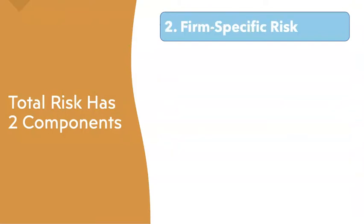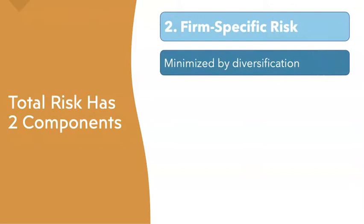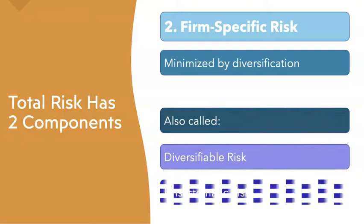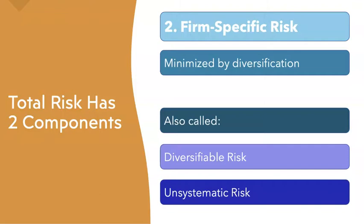On the other hand, firm-specific risk, as the name suggests, is specific to a particular firm or industry. This one you can minimize through diversification. Proper diversification can basically eliminate firm-specific risk. It's also called diversifiable risk, or unsystematic risk — it is not a part of the system of investing; it is linked to a specific firm or sometimes an industry.